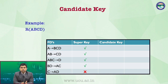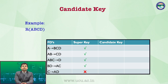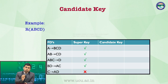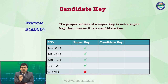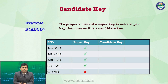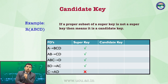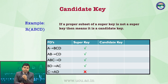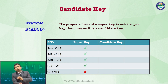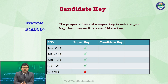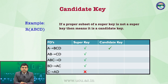पहले चार हमारे super keys हैं क्योंकि वो चारों column को identify कर रहे हैं। Candidate key क्या है — जो super key का सबसे minimum हिस्सा अगर पूरे row को identify कर पाता है। If a proper subset of a super key is not a super key, then it means a candidate key। For example, A is a proper subset of the super key {A, B, C, D}. A alone identifies B, C, D — so A is a candidate key।